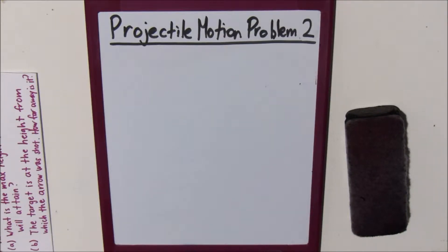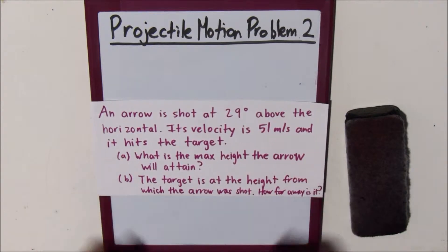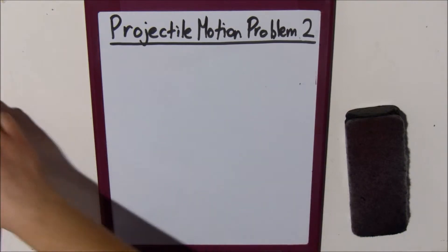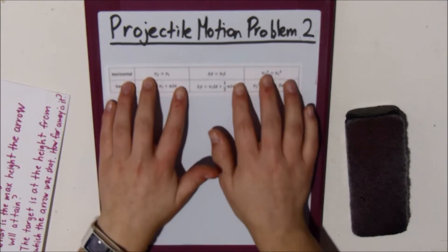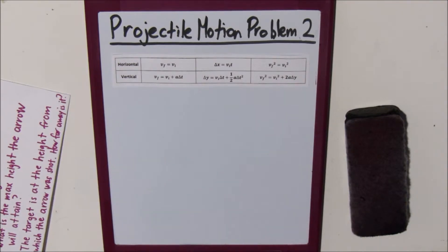Alright, so now we have another projectile motion problem. An arrow is shot at 29 degrees above the horizontal. Its velocity is 51 meters per second and it hits the target. What is the max height the arrow will attain? The target is at the same height from which the arrow is shot. How far away is it? Alright, so we have our horizontal and vertical components of the motion equations.